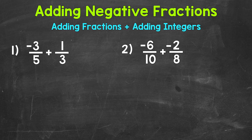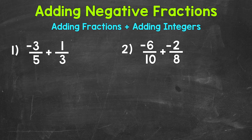Let's jump into number one, where we have negative three fifths plus one third. The first thing that we need to do when adding fractions is find a common denominator — that bottom number. We have a five and a three, so we need to find the least common multiple between those two denominators, and that's going to be our least common denominator.